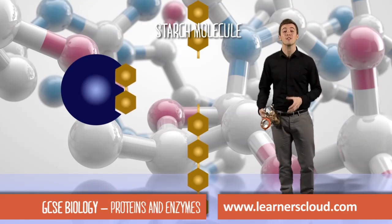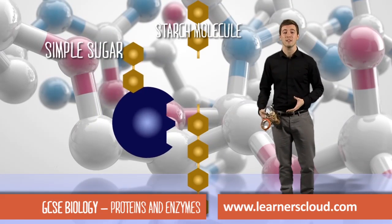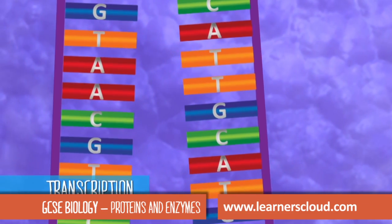Inside my digestive system they could be broken down to simple sugars relatively quickly. A section of DNA in the nucleus containing a gene unzips.